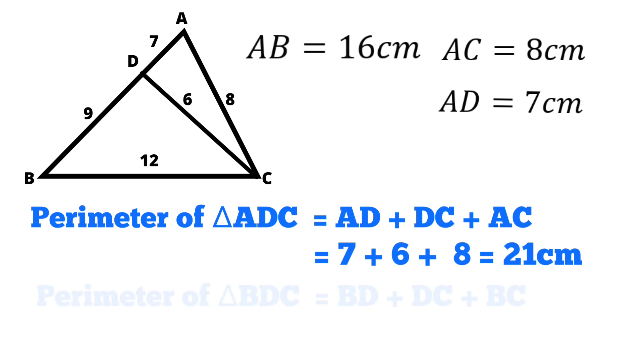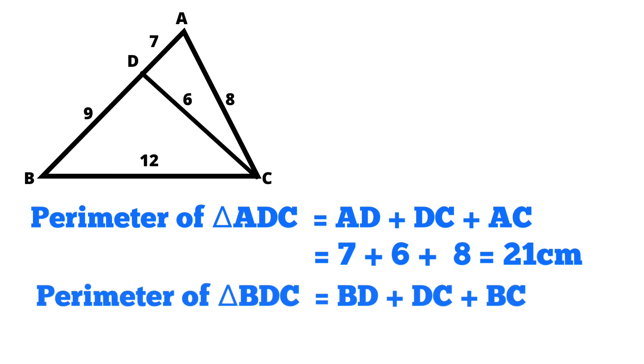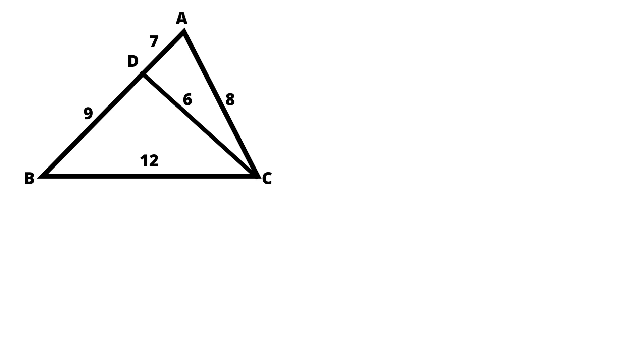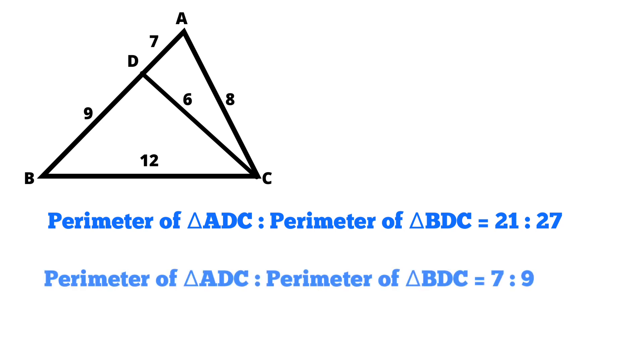On the other hand, perimeter of triangle BDC equals BD plus DC plus BC equals 9 plus 6 plus 12 which is equals to 27 centimeter. Now, perimeter of triangle ADC to perimeter of triangle BDC equals 21 to 27 which equals 7 to 9.